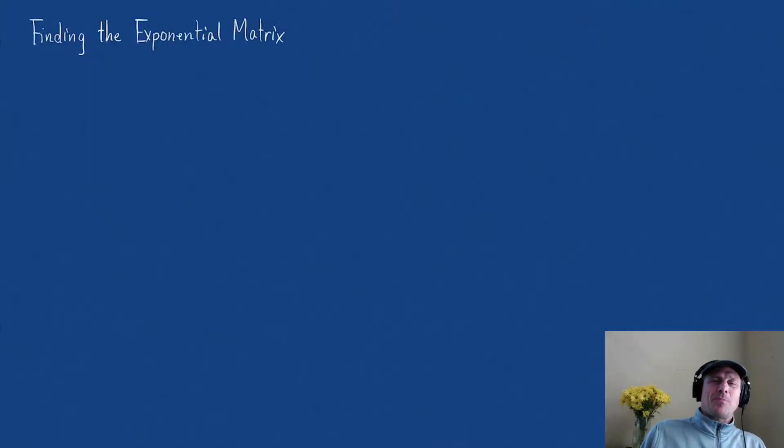Hi, welcome to Mathematics with Tom. I am Tom, and today we are going to look at finding the exponential matrix, and we're going to use two examples. The first one we're going to use is the matrix A. It's very simple: [[0,1],[0,0]].